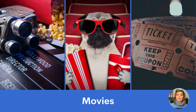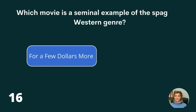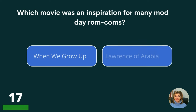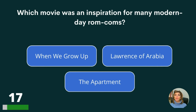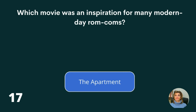Let's move on to movies. Which movie is a seminal example of the spaghetti western genre? For a Few Dollars More, Judgment at Nuremberg, or To Kill a Mockingbird? The answer is For a Few Dollars More. Which movie was an inspiration for many modern-day rom-coms? When We Grow Up, Lawrence of Arabia, or The Apartment? The answer is The Apartment.